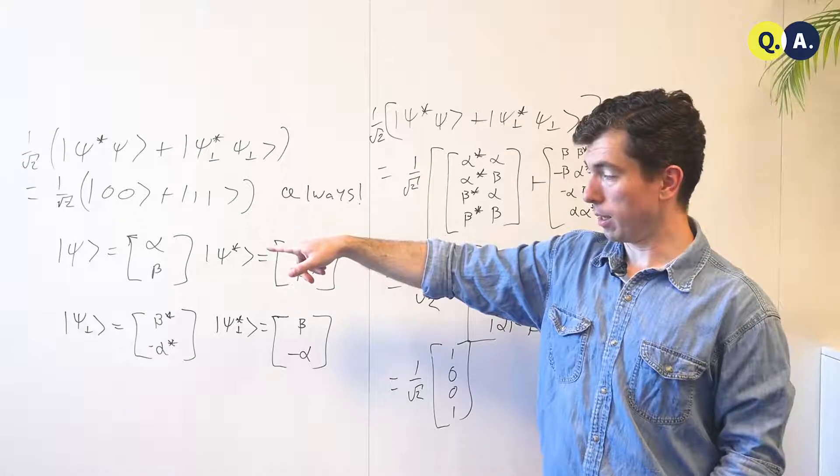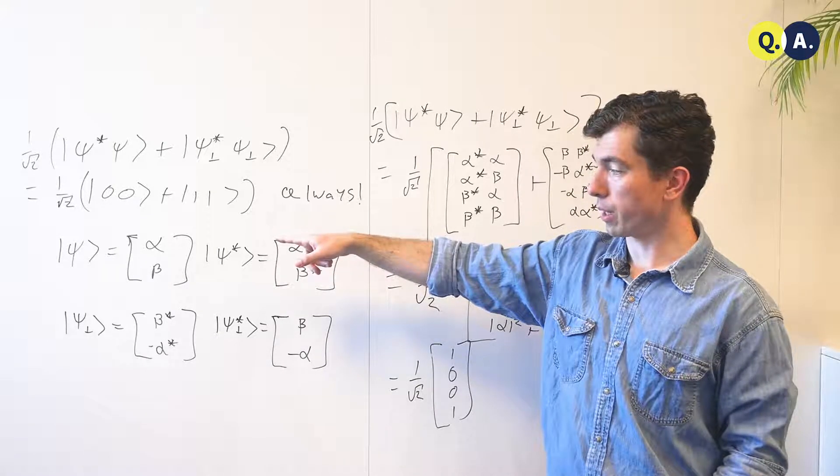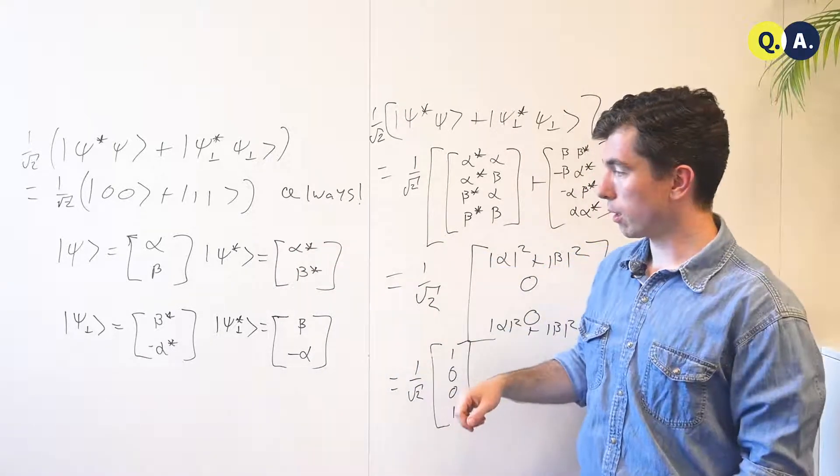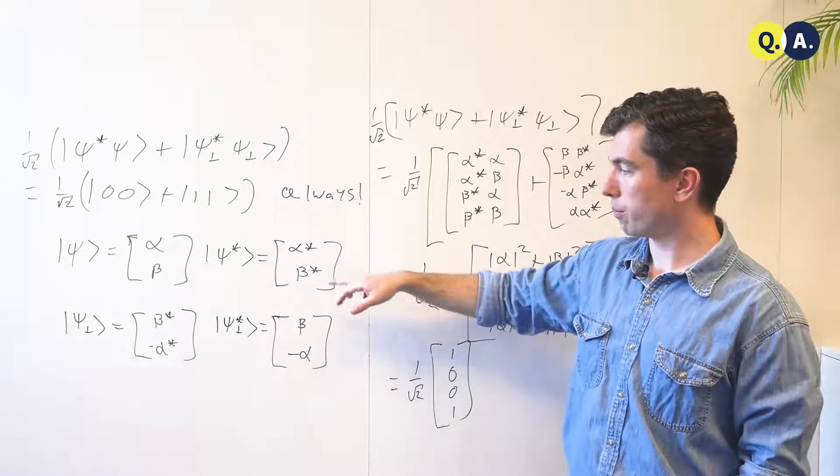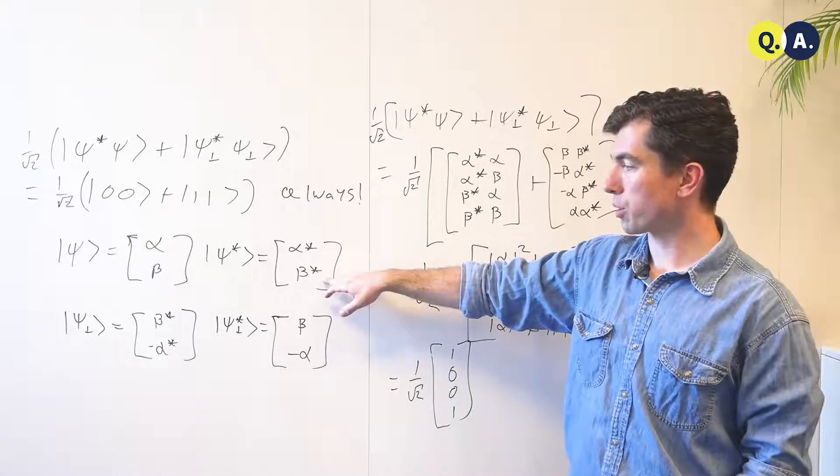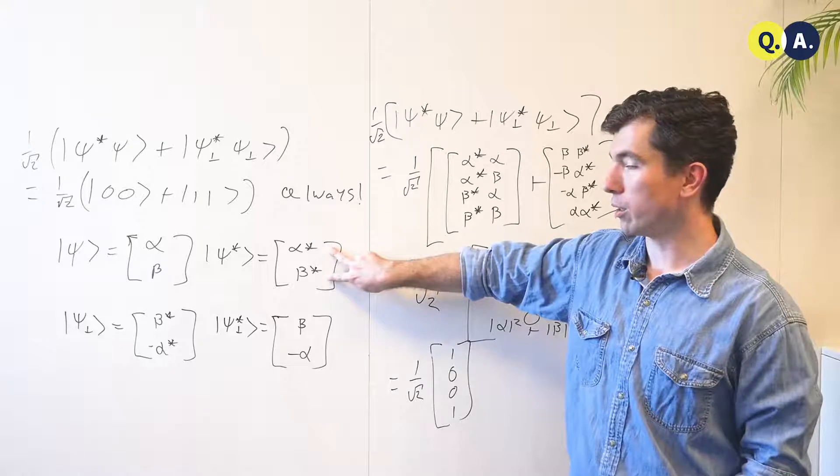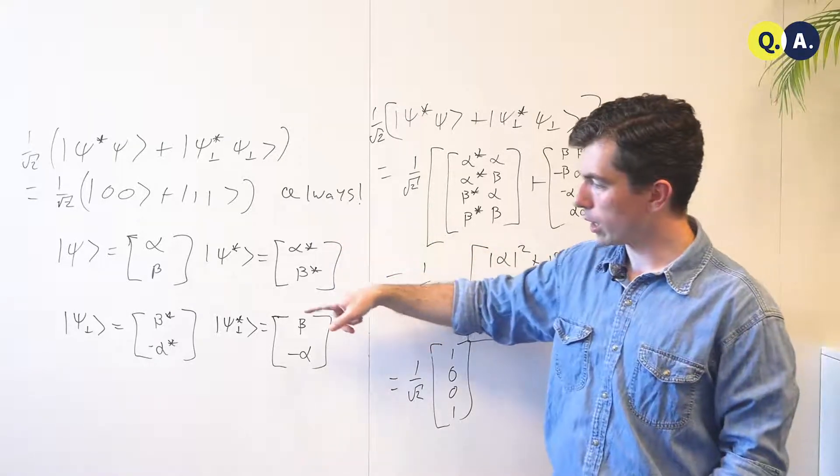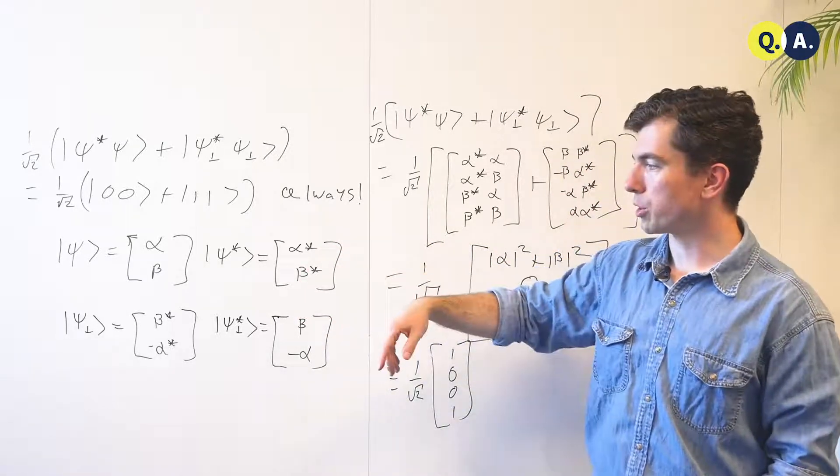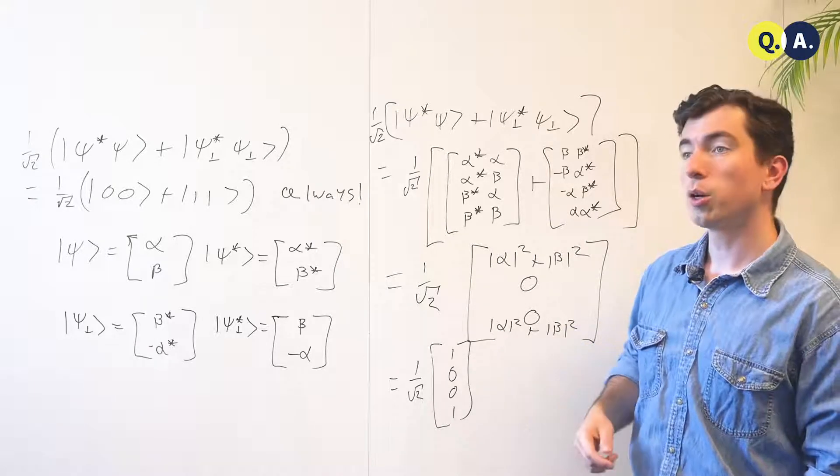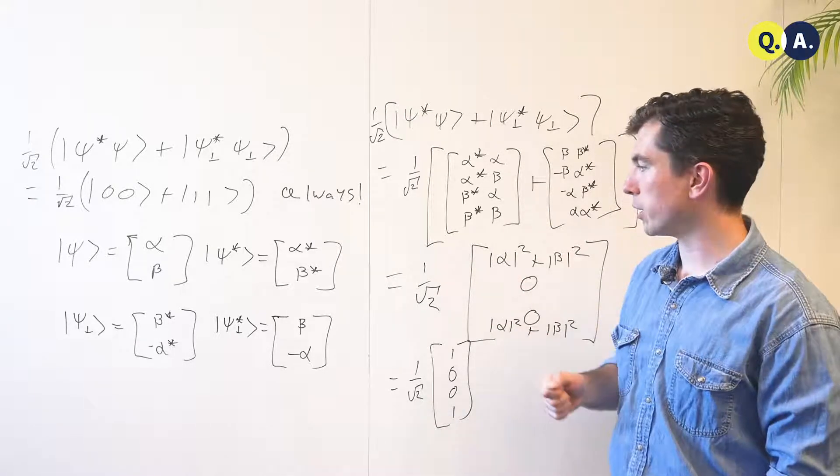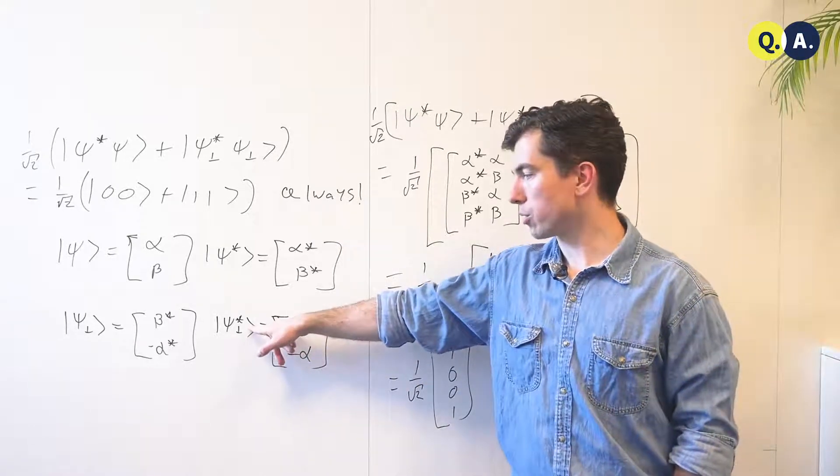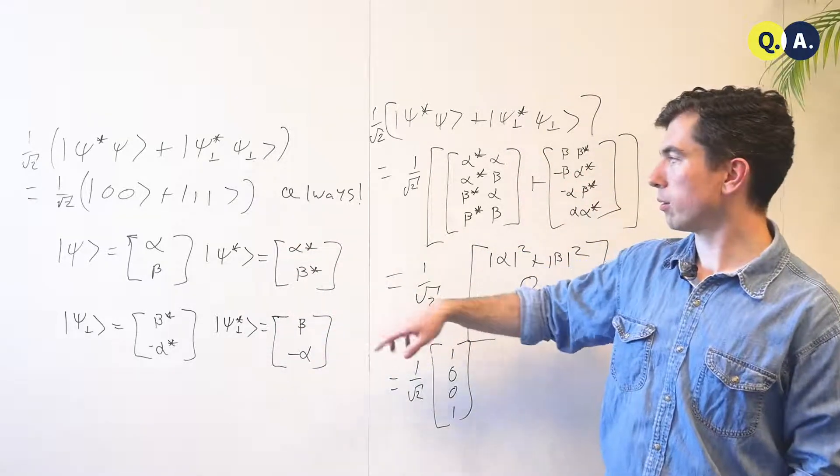So if we take an arbitrary wave vector psi, which is two complex coefficients alpha and beta, we can define psi star, which is just the complex conjugate of that state, which is also a valid state, psi perp, which is some state which is orthogonal to psi, which I encourage you to check for yourself by taking the inner product, and psi perp star, which is the complex conjugate of the orthogonal state.